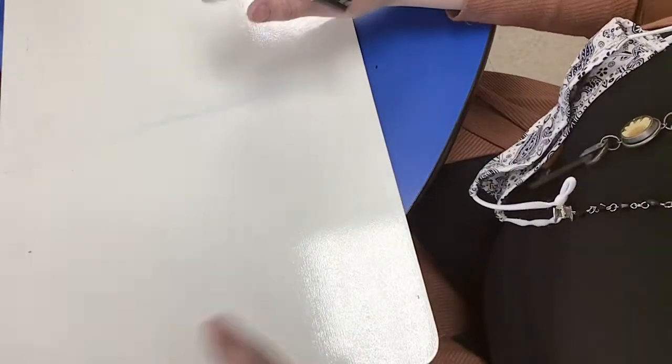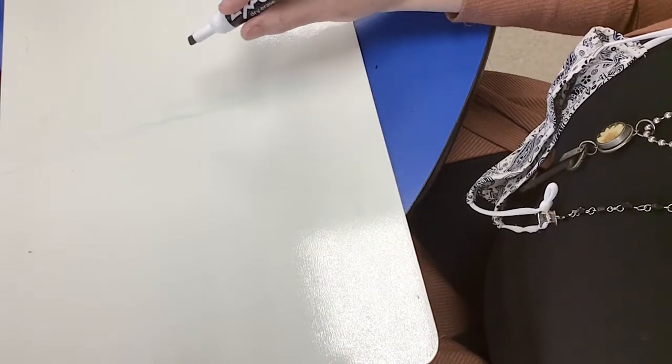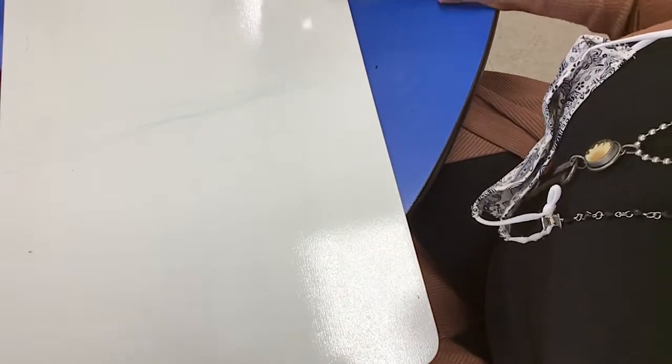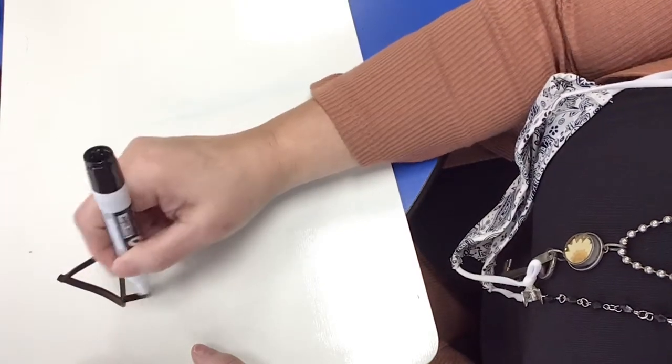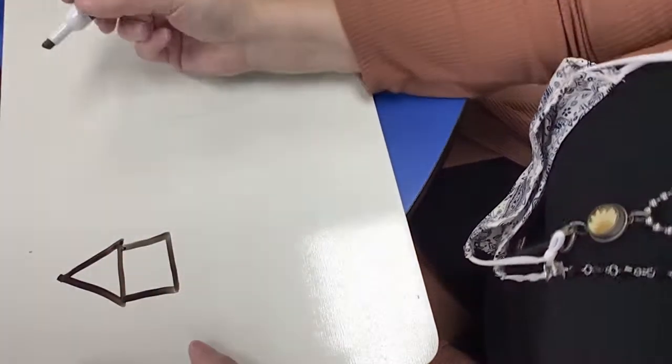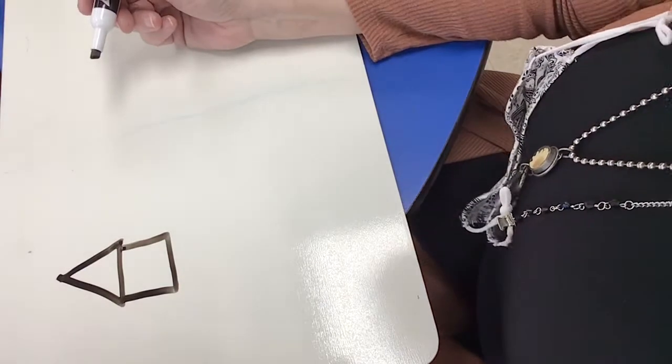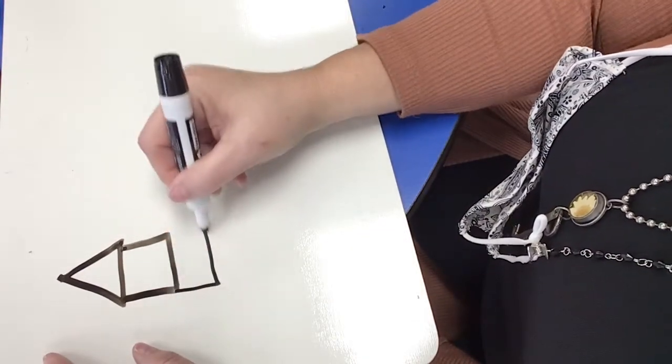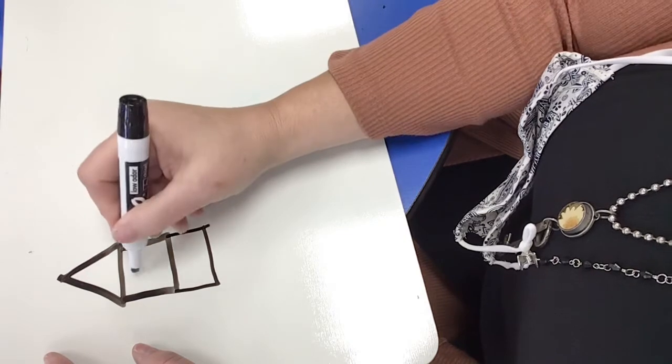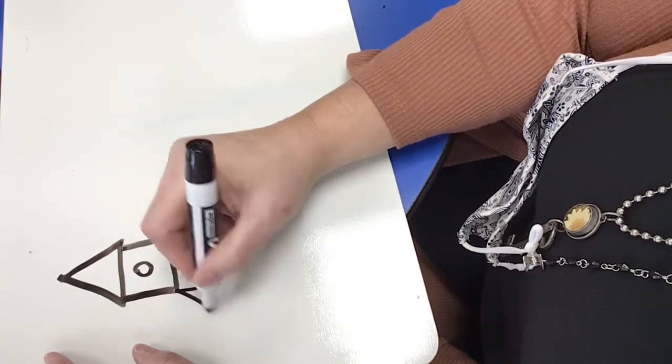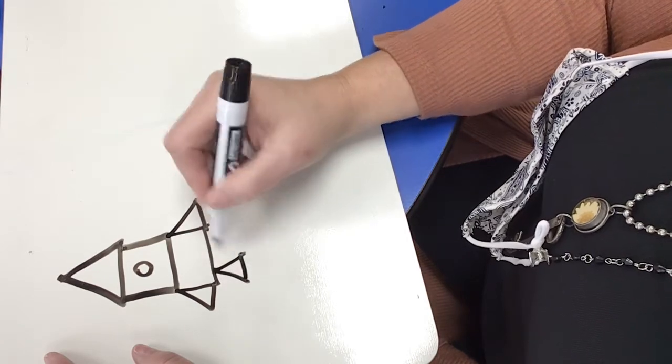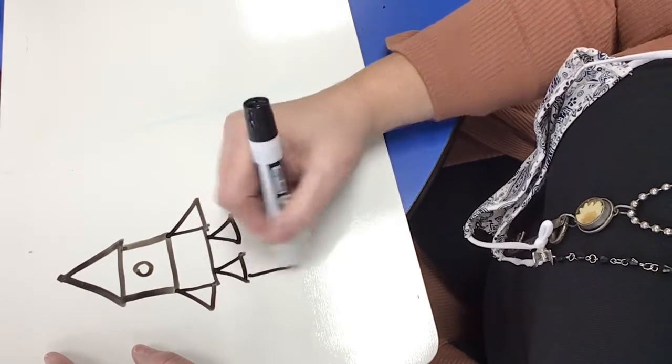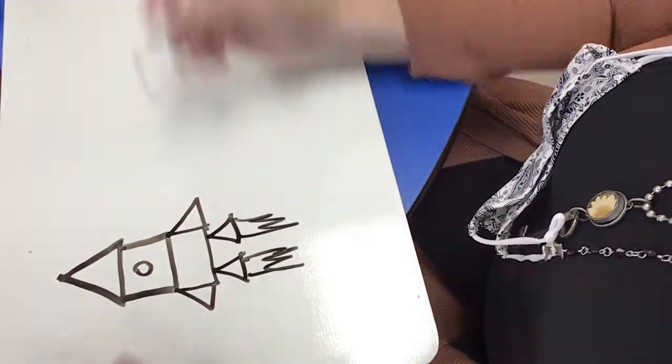So now we're going to think about drawing some things using some shapes. And everybody's favorite is always the triangle, square, house. Easy. What if we wanted to turn that into a rocket? We could just make that a little bit longer, put a circle here for a window, triangles here. We might have two engines in our rocket, and then a bunch of fire coming out of it. There's our rocket.